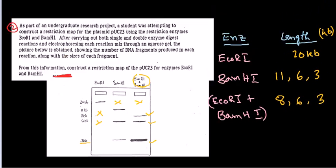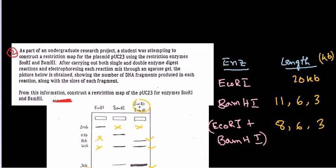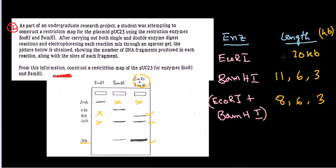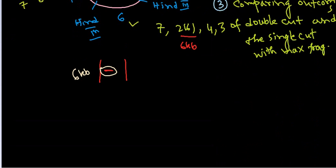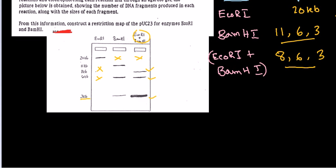Let's solve the problem. Remember the different stages discussed earlier. Stage one is to find out the total length of the plasmid — that's very important. Once you find the total length, the second step is to place the first enzyme cut site, which is the one generating the lowest number of fragments. In our example, ECO R1 produces only one fragment, so we place the ECO R1 site first. The third step is to compare the outcomes of the double cut and the single cut with maximum fragments.